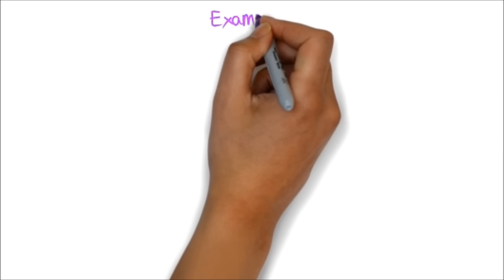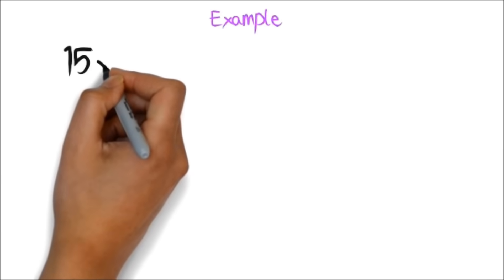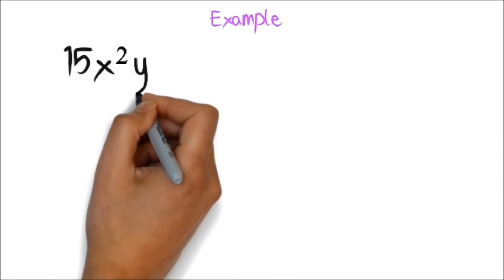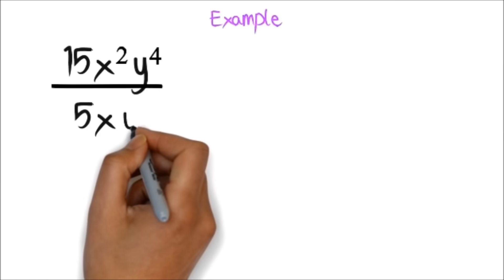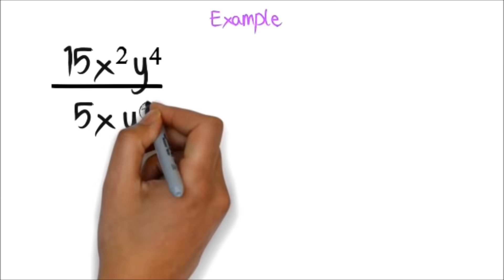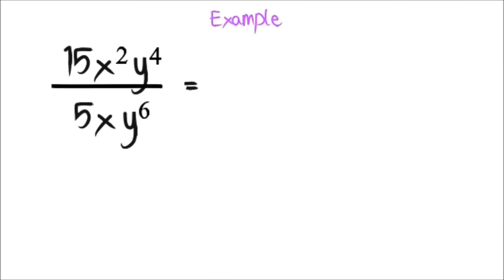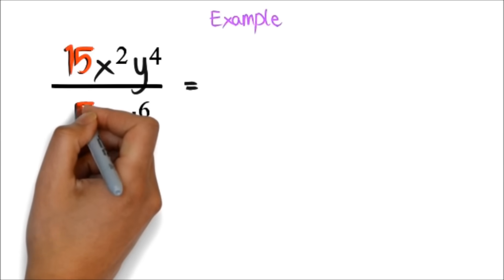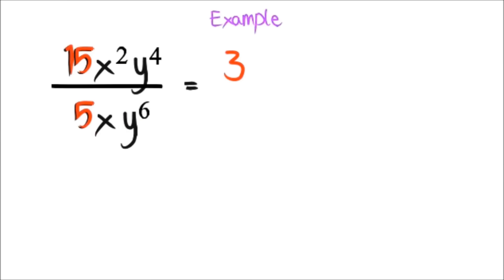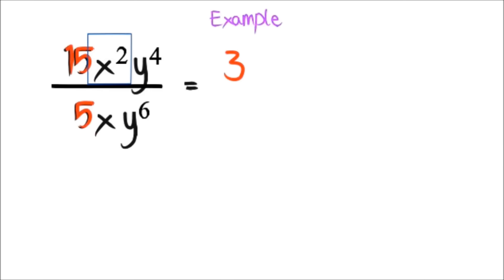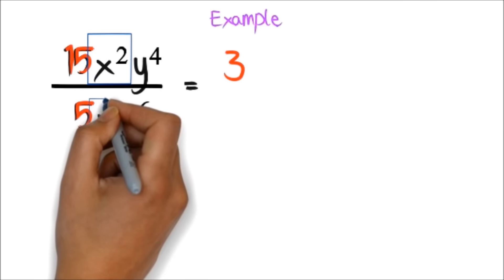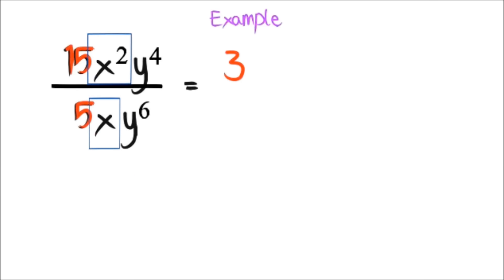Let's try another example. Here, we have 15x squared y exponent 4 divided by 5xy exponent 6. First, we divide the 15 by the 5 to get 3. Next, we notice there are 2x at the top and 1 at the bottom. So, our answer will have 1x at the top.